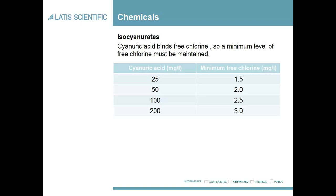Cyanuric acid should be tested at usually a weekly level. The cycle is generally pH-neutral.